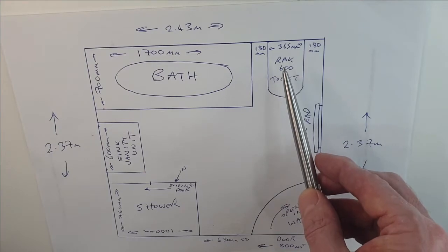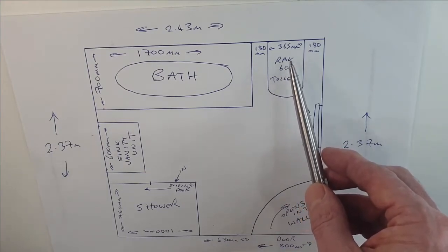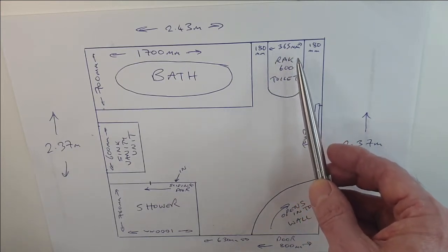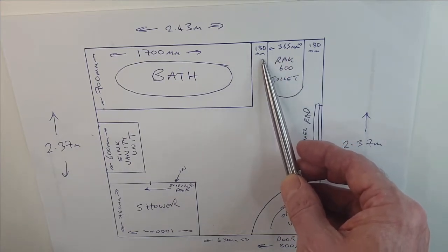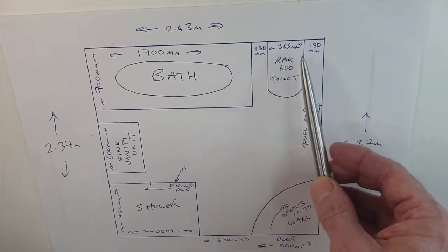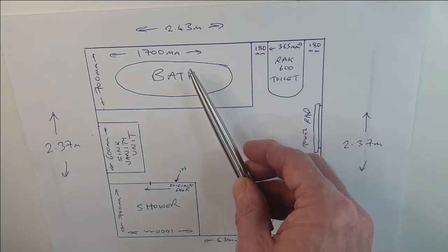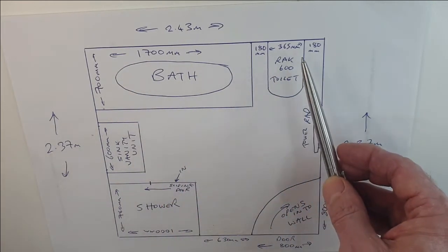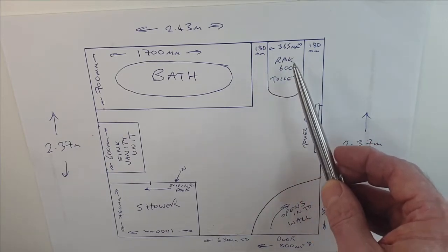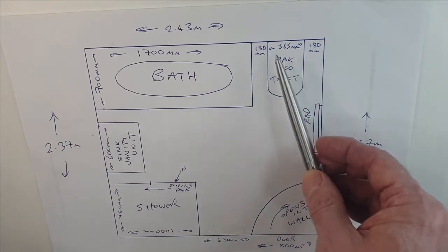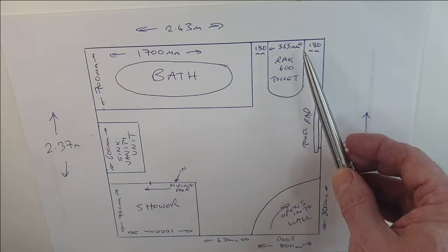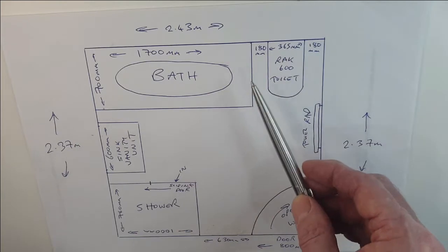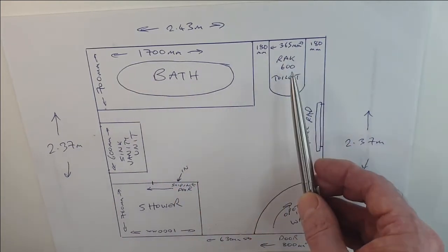A toilet is typically between 350 and 500mm wide. We knew the Roca 600 toilet is 365mm wide, which gives us 180 millimeters either side — perfect. Having the dimensions and knowing where the bath was naturally led us to place the toilet in that spot. The other benefit is that this is an external wall, so the waste can go straight out through it.